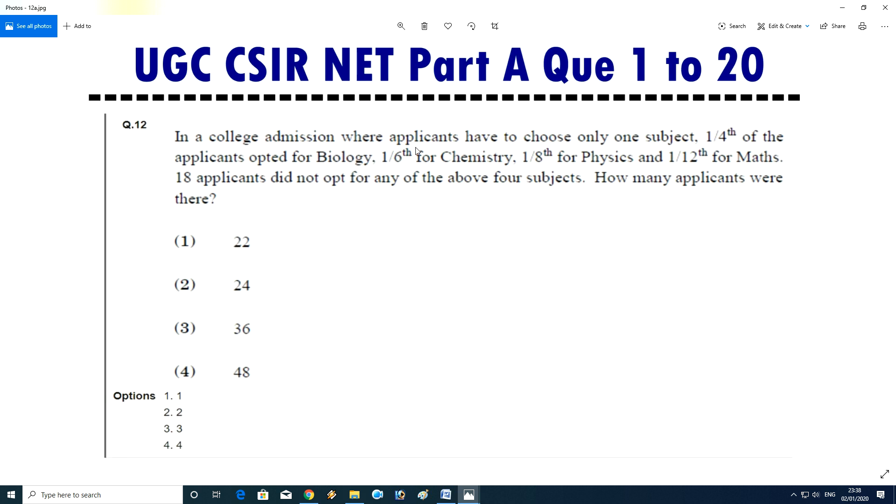Question number 12: in a college admission where applicants have to choose only one subject, one fourth of applicants opted for biology, one sixth for chemistry, one eighth for physics, and one twelfth for maths. 18 applicants did not opt for any of the above four subjects. How many applicants were there? Applicants were actually 48, answer is D.